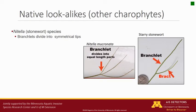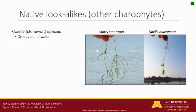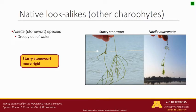Nitella, or stonewort species, are another group of carophytes that could be confused with starry stonewort. In fact, the scientific name, Nitellopsis, means 'like Nitella.' However, whereas Nitella branchlets fork into tips of equal length, starry stonewort's forks are uneven in length. Also, if you pull Nitella out of water and hang it upside down, its branchlets droop, while starry stonewort's branchlets stay more rigid.